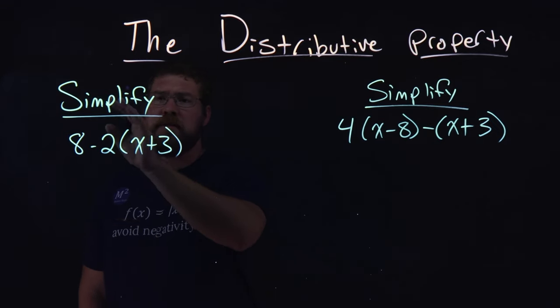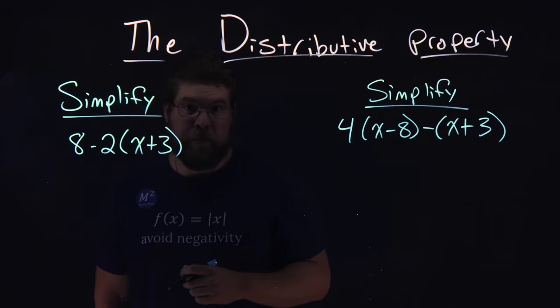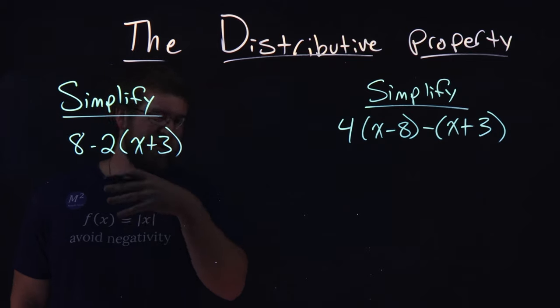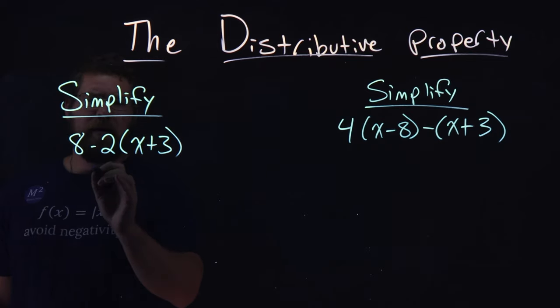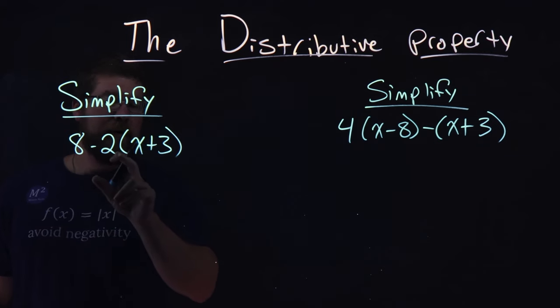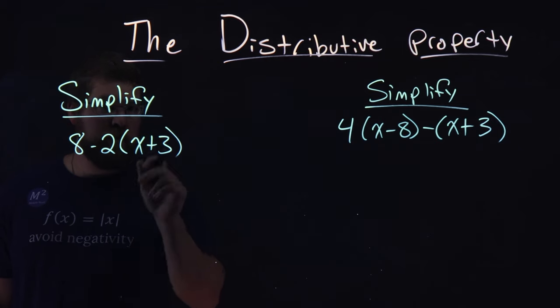Our first example here, simplify 8 minus 2(x+3). The x plus 3 is in parentheses, so we're going to combine the distributive property with our normal operations. First thing I'm noticing, I see the x plus 3, and I can't simplify that anymore. Then we have multiplication on the outside. That has to happen first. We've got to distribute the 2.